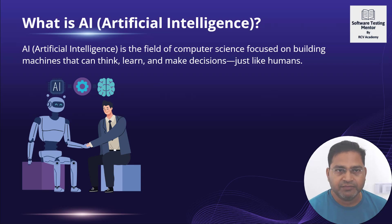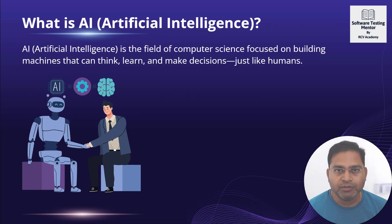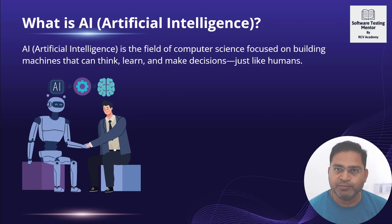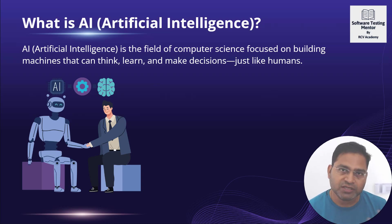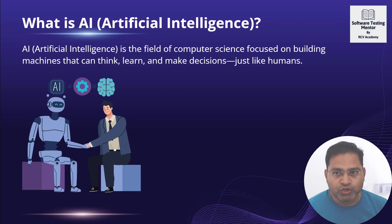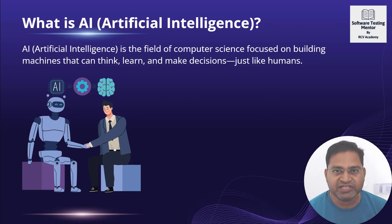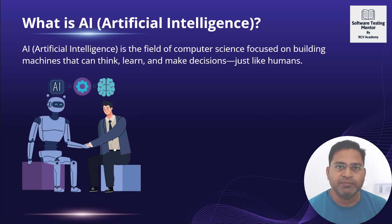Humans are by far the most intelligent species on earth. When we try to mimic that same sort of intelligence in machines, that is what artificial intelligence is. We are not close to what human beings can do, but any intelligence introduced into machines or software is artificial intelligence. AI is a field of computer science which focuses on building machines that can think, learn, and make decisions just like we humans do.